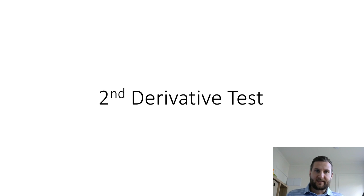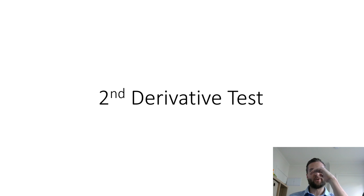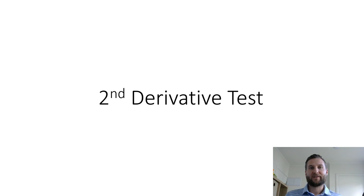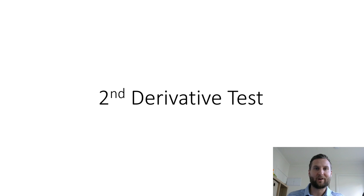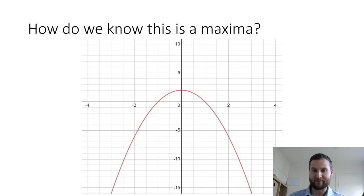Kia ora folks. The second derivative test is going to let us know whether or not we have a local maximum — a peak — or a local minimum, or a trough. So if we don't have a graph and we can't see the function, how are we supposed to determine if that indeed is a max or a min value? This is where the second derivative test comes in.